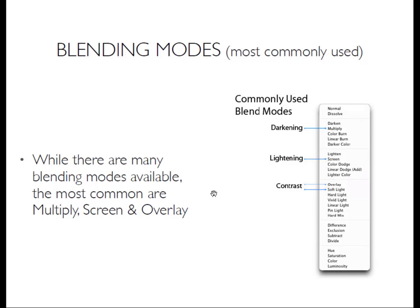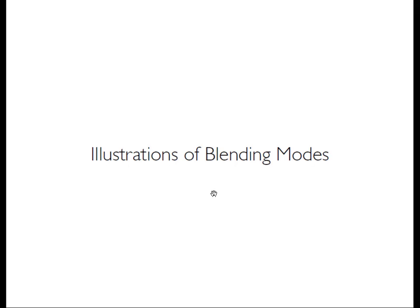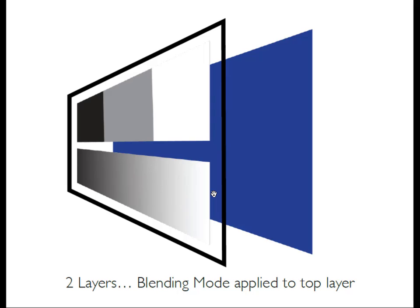I found by using them quite a bit that by far these are the ones I use the most and that tend to work for my imagery. The next few slides are going to be an illustration breaking down blending modes in their simplest form. Here we have two layers: a background layer, which might be the image you open initially inside Photoshop, and another layer in the foreground — in front of the blue layer.